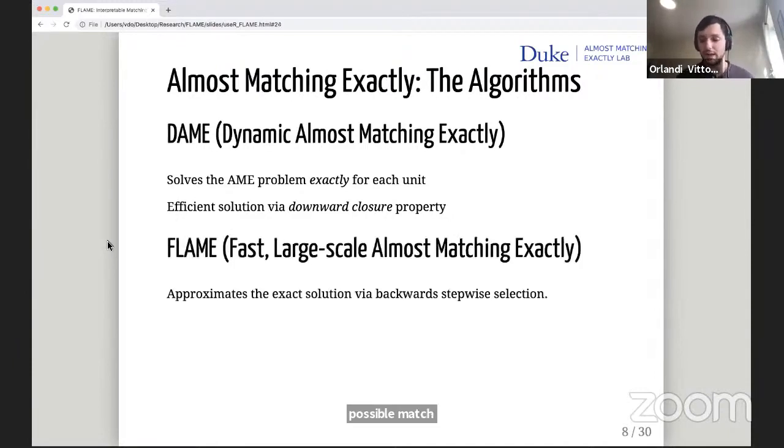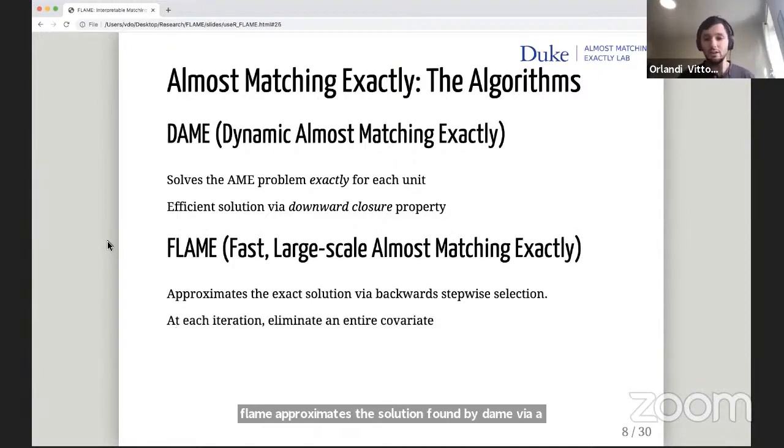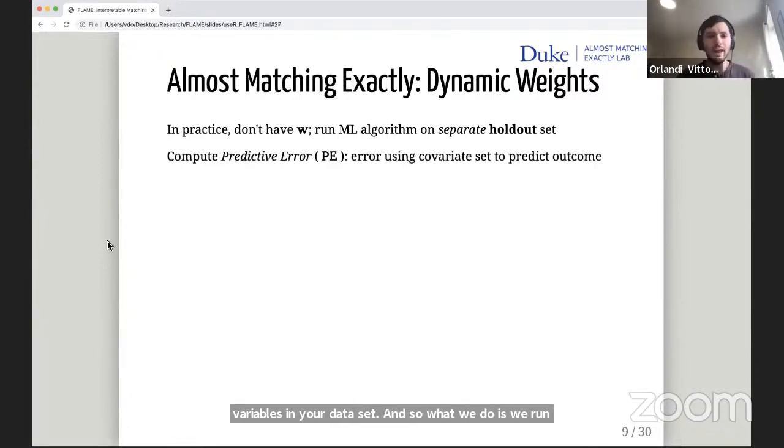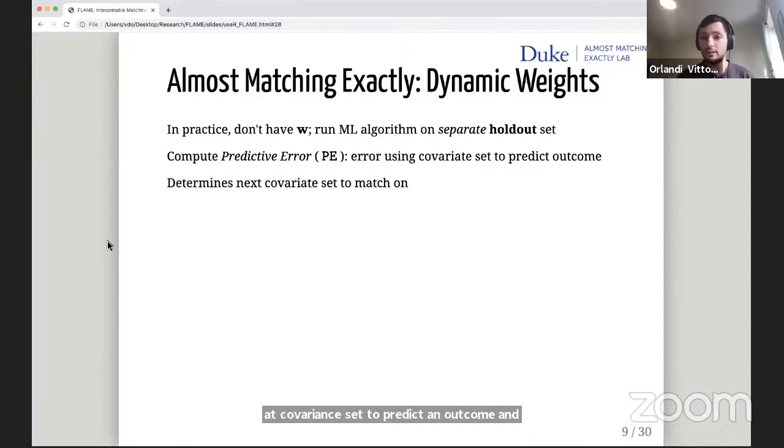Flame approximates the solution found by Dame via a backward stepwise selection procedure. At each iteration, you eliminate an entire covariate. The first iteration, you try and match exactly on all the covariates. Then you ignore the least important one, match on the remaining ones and keep going. Now in practice, no one gives you a nice little covariate vector describing the importances of your variables in your dataset. What we do is we run a machine learning algorithm on a separate holdout set of data that we're not going to match. Whenever we're trying to consider a theta, a vector of covariates, we're going to compute its predictive error PE, which is the error in using that covariate set to predict an outcome. This determines the next covariate set to match on. We're going to choose the theta that yields the lowest predictive error.